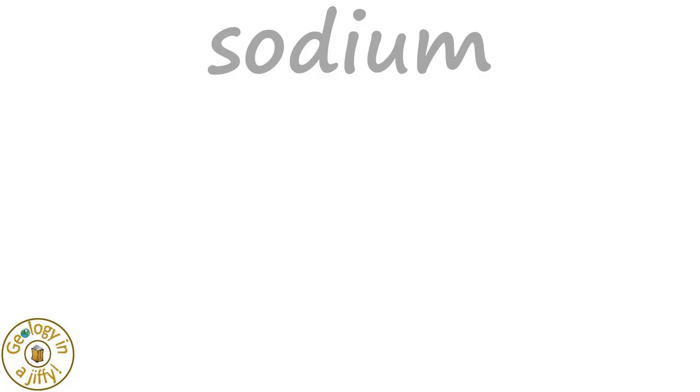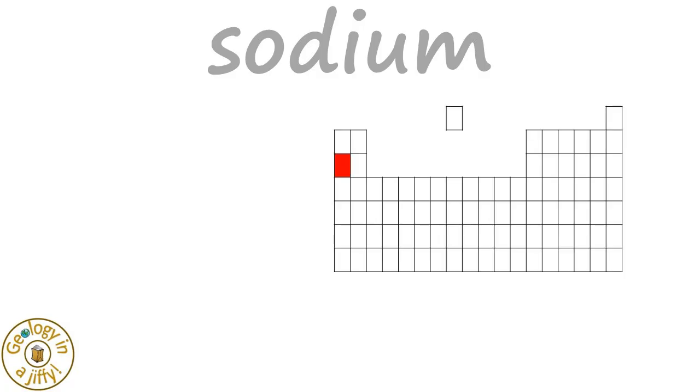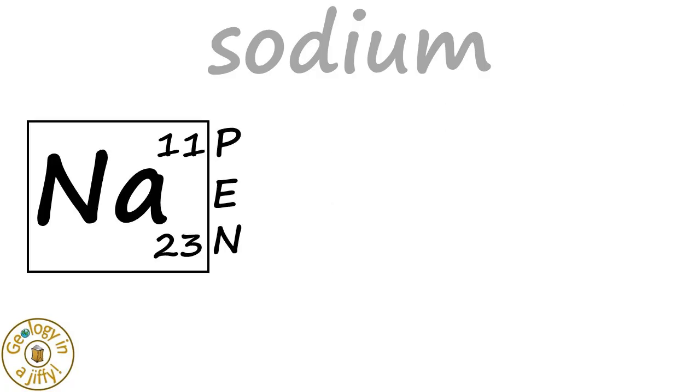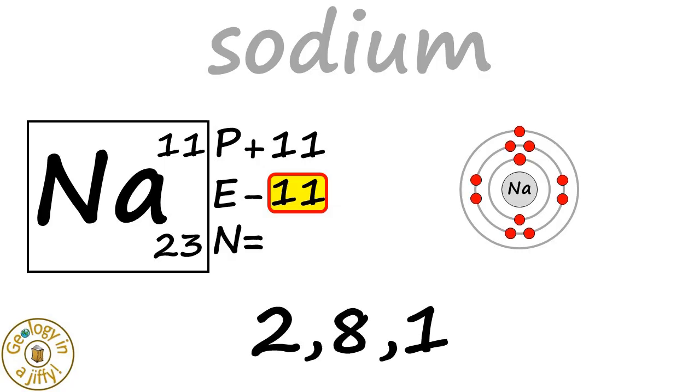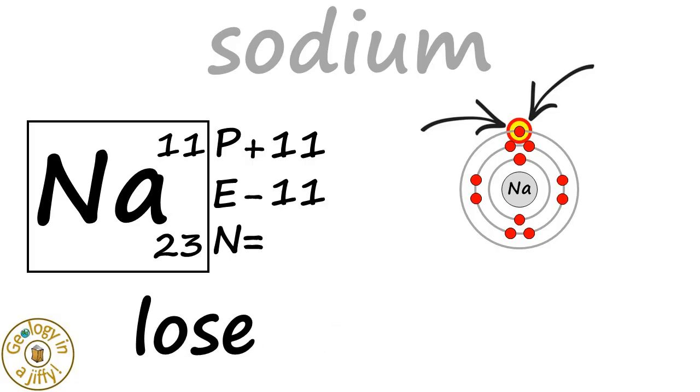Sodium is found here in the periodic table. Using our model with positive protons, negative electrons, and neutral neutrons, the proton number is 11, meaning there are 11 protons and therefore 11 electrons. The atomic structure has 11 positives in the nucleus and electrons arranged as 2, 8, 1. With this one electron on the outer shell, sodium wants to lose one electron.